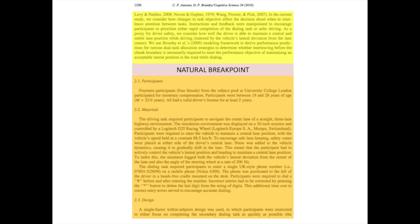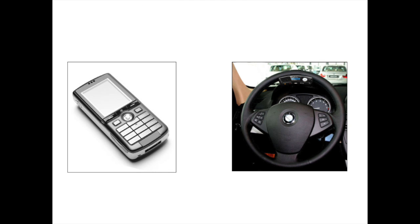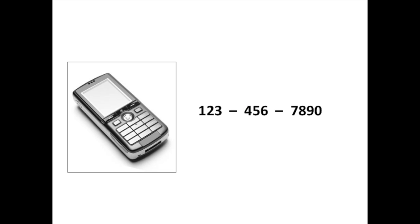One domain in which interleaving at natural breakpoints has been studied a lot is in manually typing digits while also steering a vehicle. A phone number typically consists of multiple subsets of digits. Completing such a subset or chunk forms a natural breakpoint to interleave tasks.